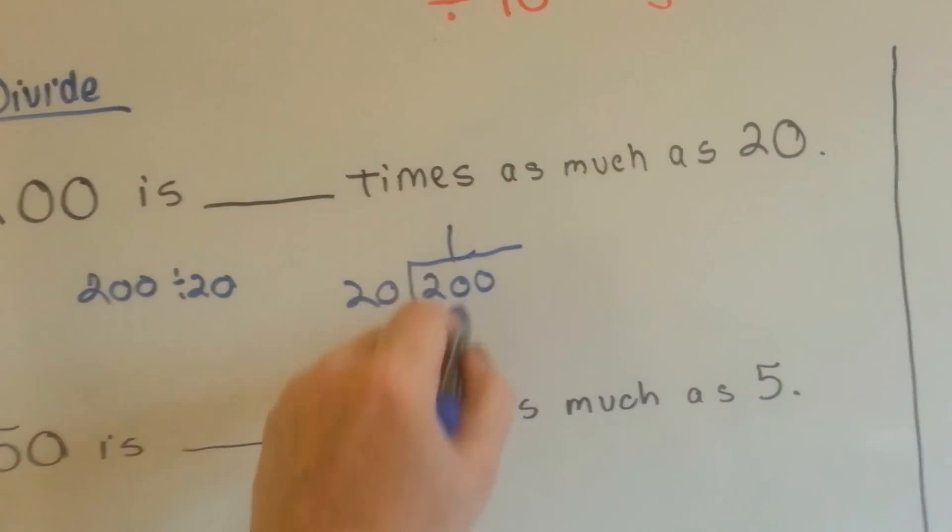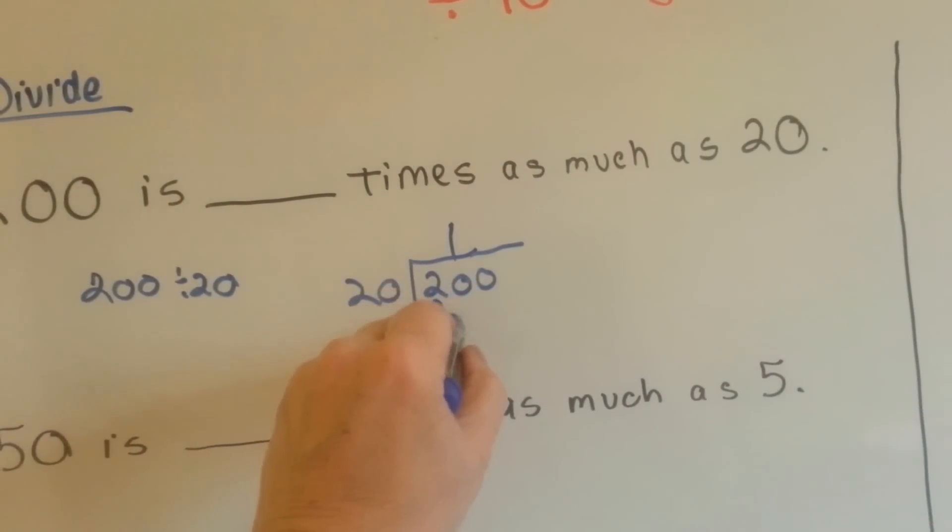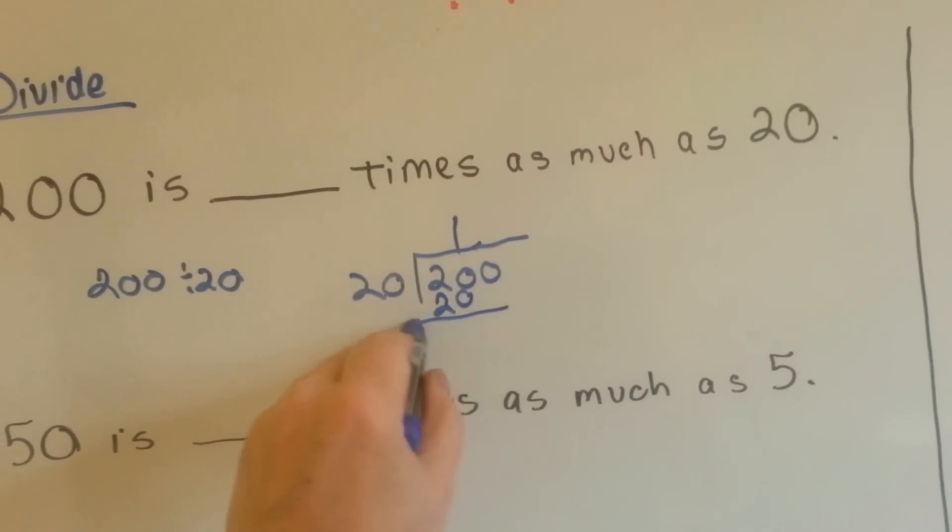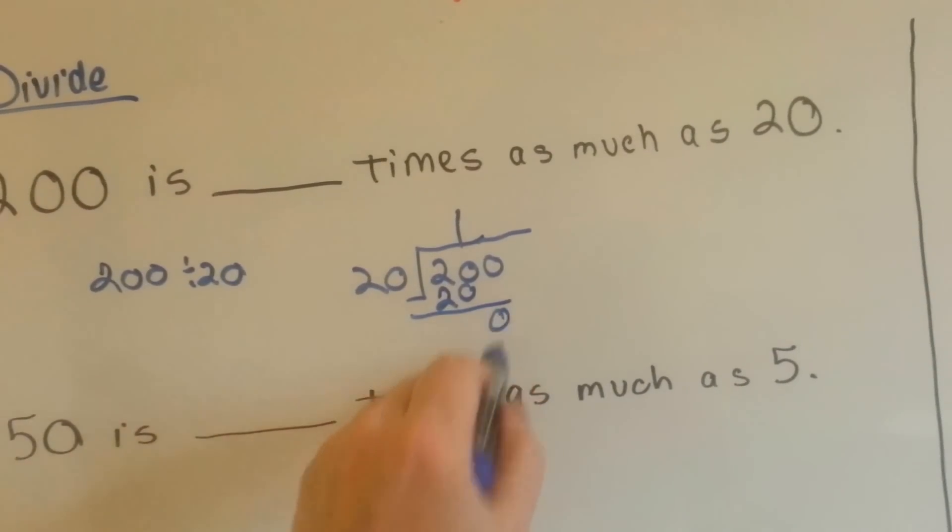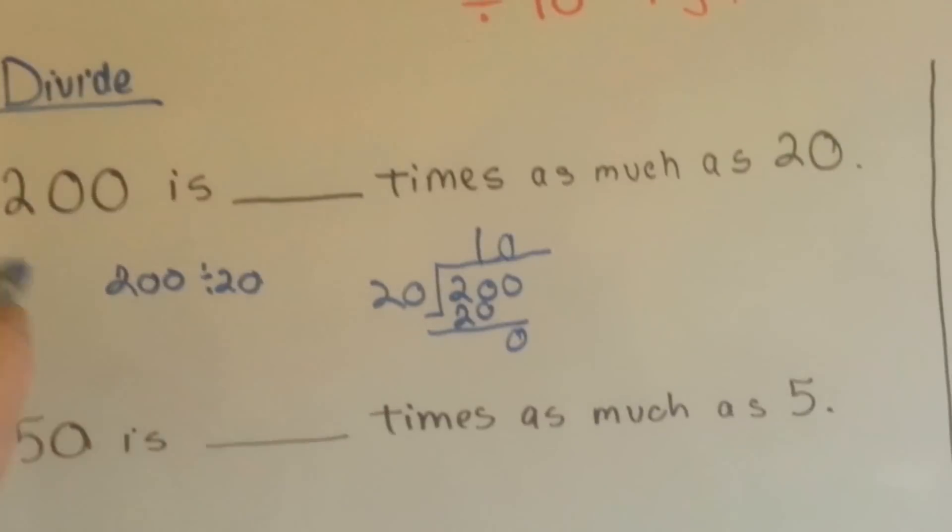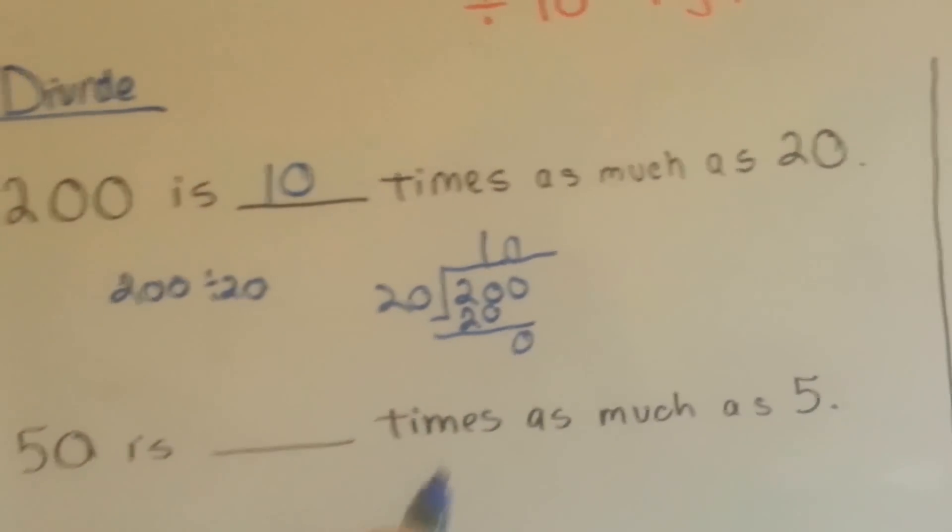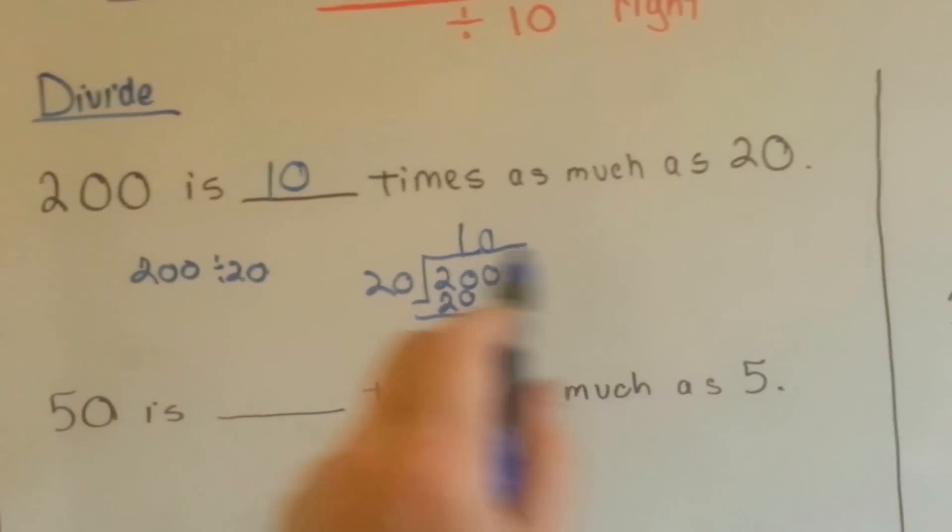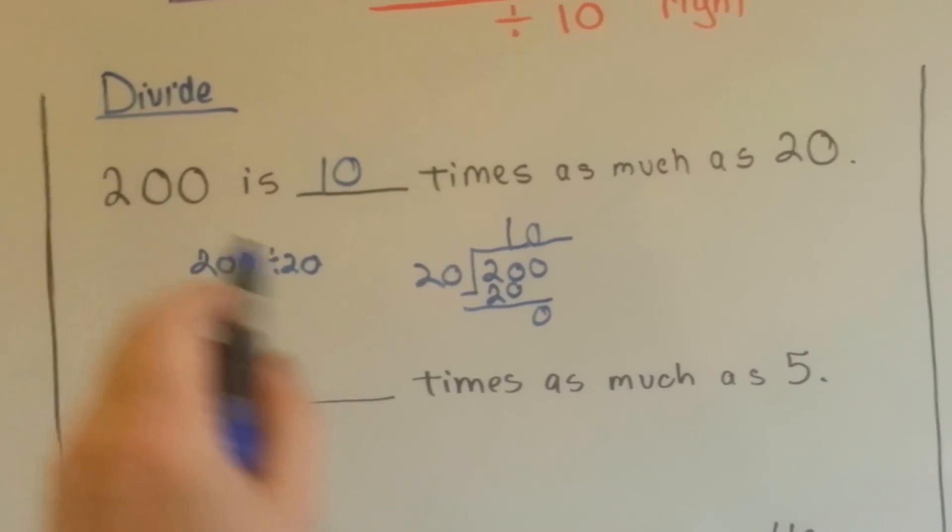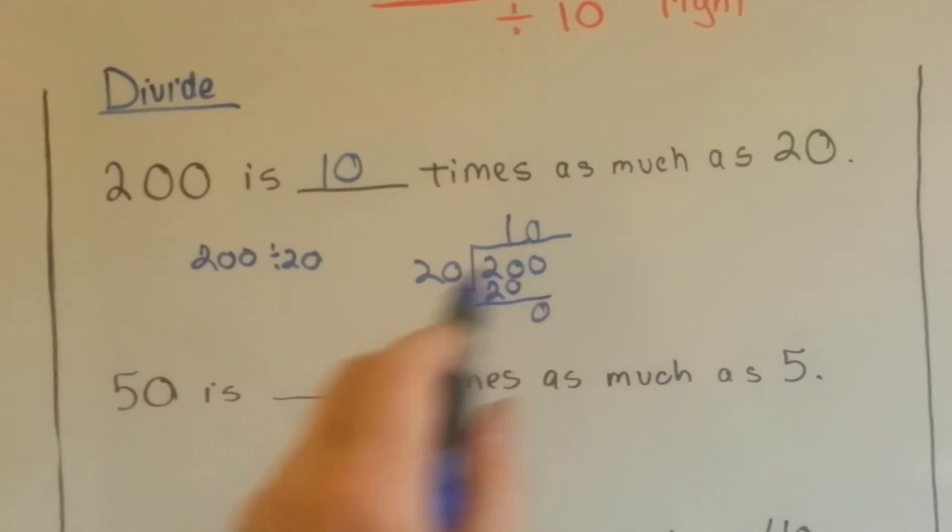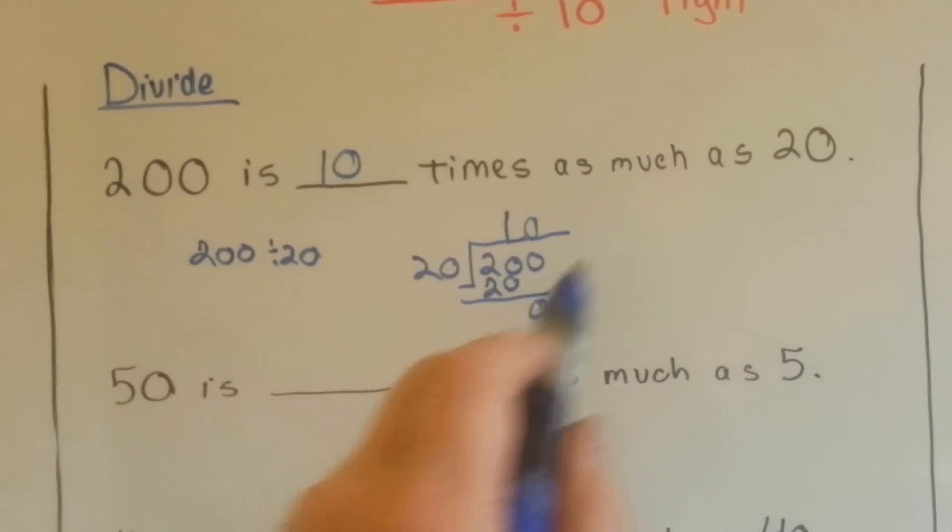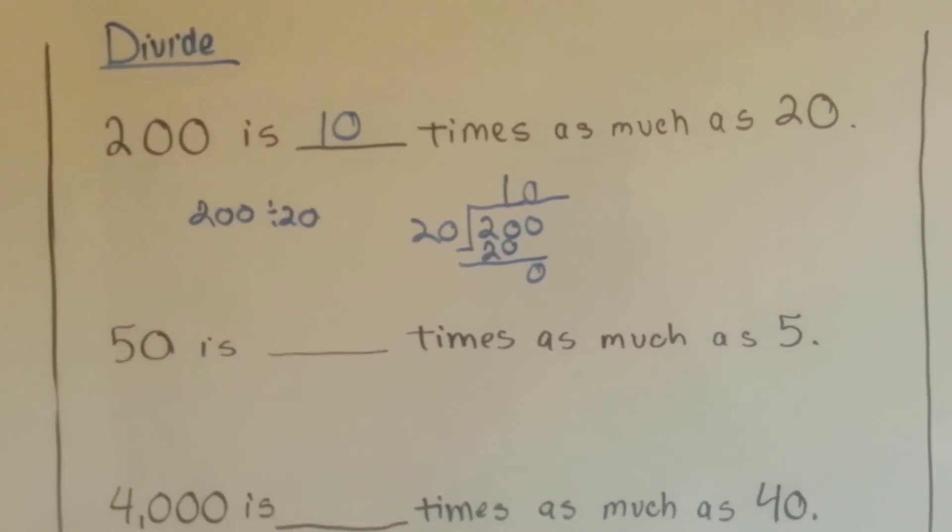One of them. We do the multiplication. 20 times that 1. We do our subtraction. We drop the 0 down, we get 0, and we put a 0 up here. So 200 is 10 times as much as 20. We also could have said 20 times what is 200? Because multiplication and division are the inverse opposite of each other, right? So 20 times something is equal to 200.